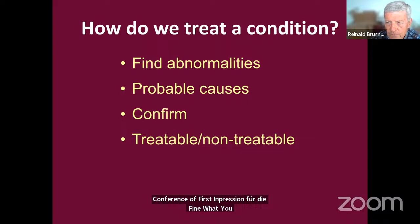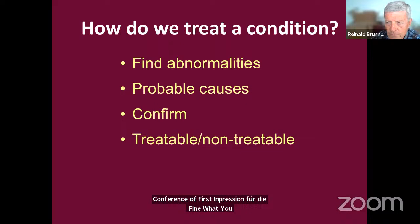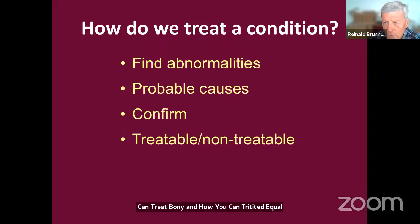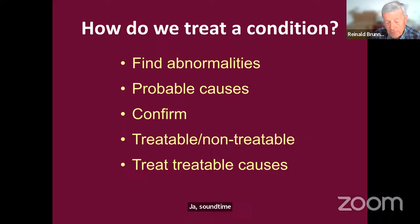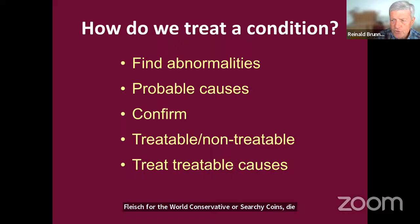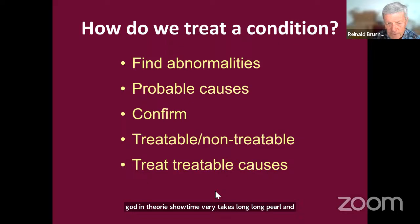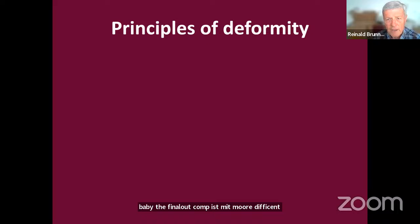After listing all abnormalities, reason about the probable cause of each—why did it develop, and why is it causing the current problem? Then confirm your impression using a clinical approach, x-rays, or other means. Finally, define what you can treat and when and how—conservatively or operatively—or whether it is not treatable at the moment. Discuss the treatment approach with the patient.